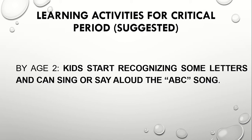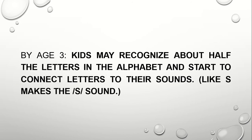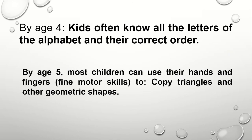Here are suggested learning activities for the critical period. By age 2, kids start recognizing some letters, can sing and say aloud the A, B, C sounds. By age 3, kids may recognize about half the letters in the alphabet and start to connect letters to their sounds — vocal sounds like the 'S' sound: s, s, s.